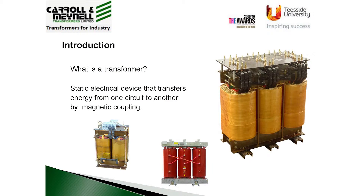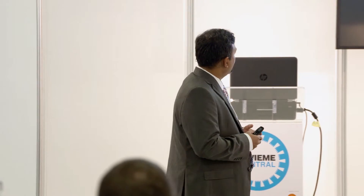A transformer is a static electric device that transfers energy using magnetic coupling. The transformer is of course a vital component in the transmission and distribution system and plays an important role in the safe operation of the grid. We have broadly oil-cooled transformers and dry type transformers.